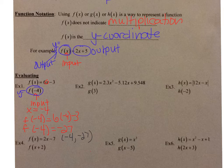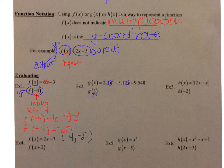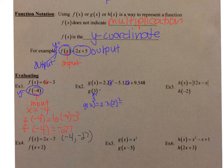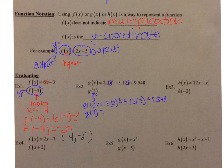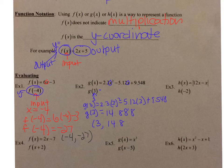For g(x) = 2.3x² − 5.12x + 9.548, we're looking for g(3). Wherever I see an x I plug in 3: 2.3 times 3² minus 5.12 times 3 plus 9.548. You can plug that whole expression into your calculator at once and you get 14.888. So my input is 3 and my output is 14.888.